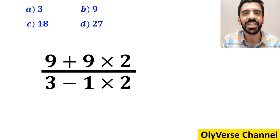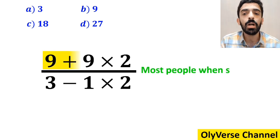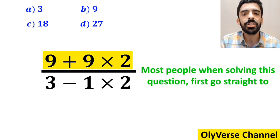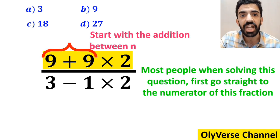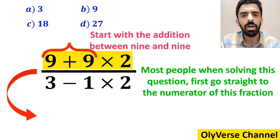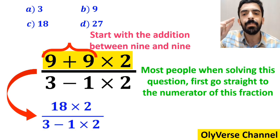Let's go through the surprise one and solve it together. Many people, when solving this question, first go straight to the numerator of this fraction and start with the addition between 9 and 9. So, instead of the original expression, they rewrite it as 18 times 2 over 3 minus 1 times 2.